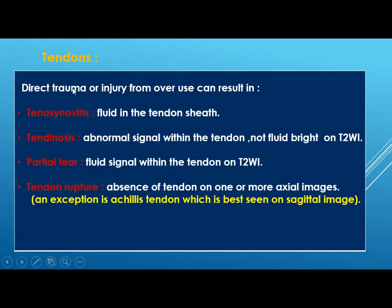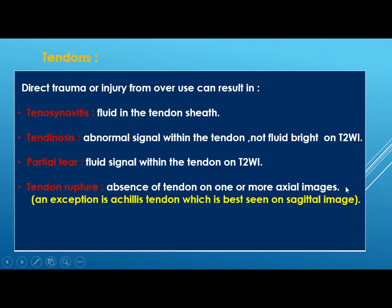Tendons are prone to direct trauma or overuse injury. Tenosynovitis shows fluid in the tendon sheath. Tendinosis shows abnormal signal within the tendon, not fluid-bright on T2. Partial tear will be fluid-bright on T2. Tendon rupture shows absence of the tendon on one or more axial images. An exception is the Achilles tendon, which is best imaged on sagittal image, not axial.